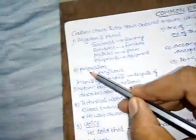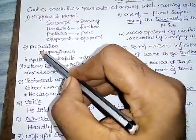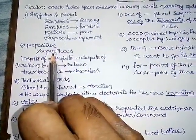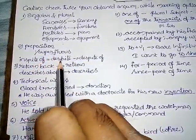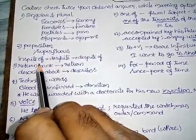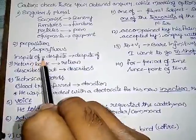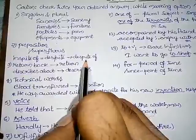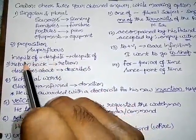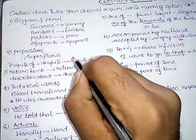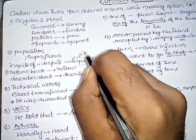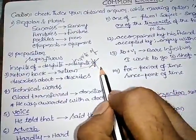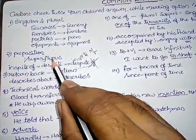Coming to preposition. In preposition, they give the superfluous, means they give the additional word. For example, the meaning of despite means in spite of, but in the question they should give despite of many problems. So despite means in spite of, so double of, so you can remove the of.